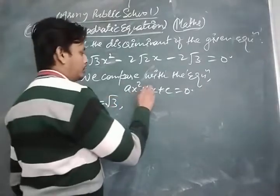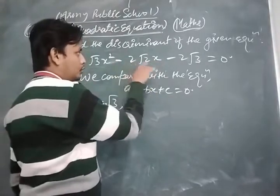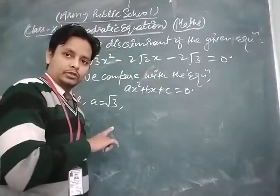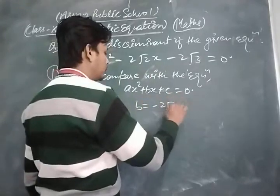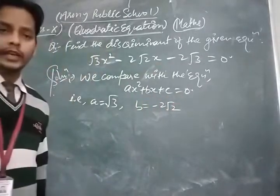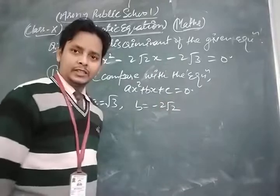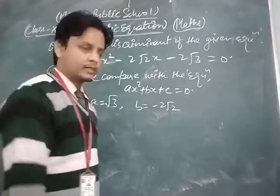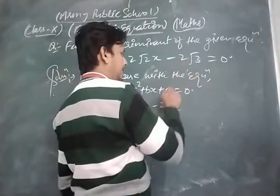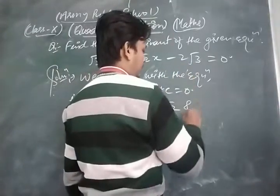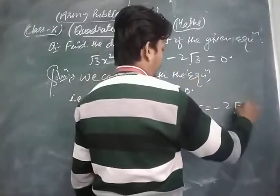The value of b is the coefficient of x, which is -2√2. So b = -2√2. And c is the constant term, independent of x. In this equation, the constant term is -2√3, so c = -2√3. Note that since there is a minus sign, we take the full signed value.